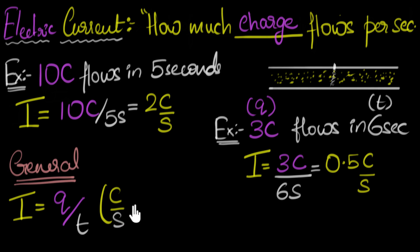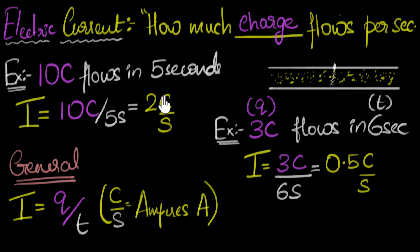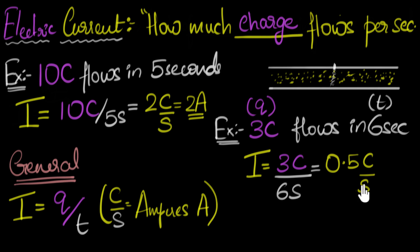Coulombs per second is often called amperes, which we write as capital A in short. This is named after the French scientist André Ampère, who did a lot of work on electricity. So the current from our first example is two amperes, and the second example is 0.5 amperes — amperes just means coulombs per second.